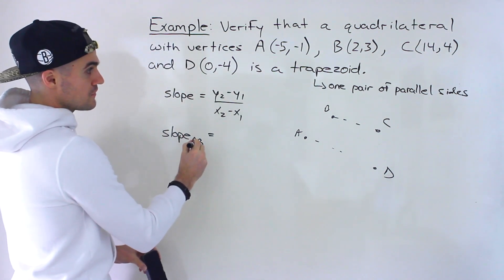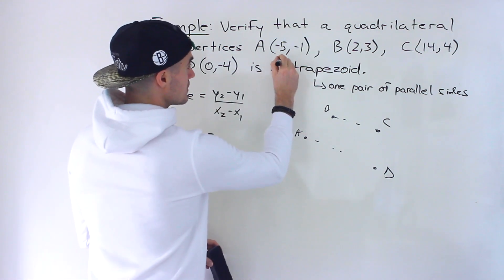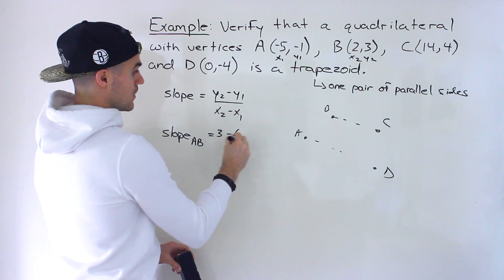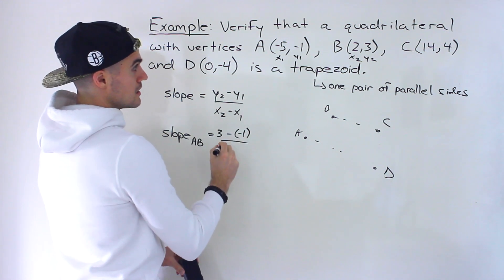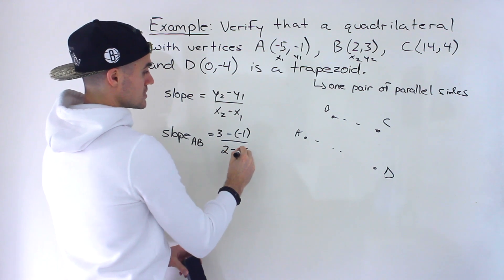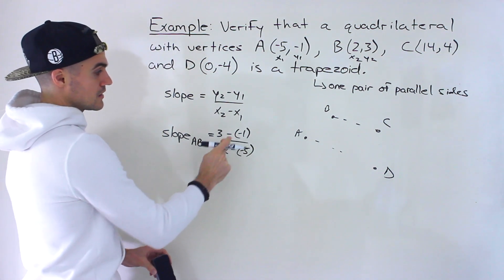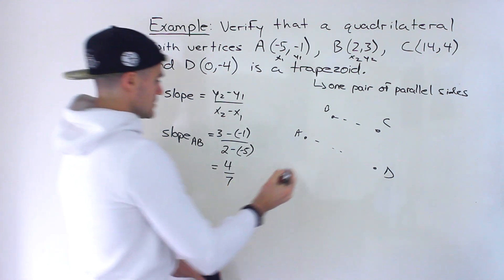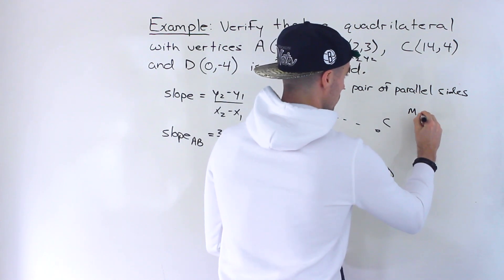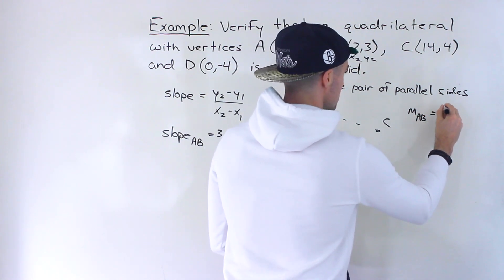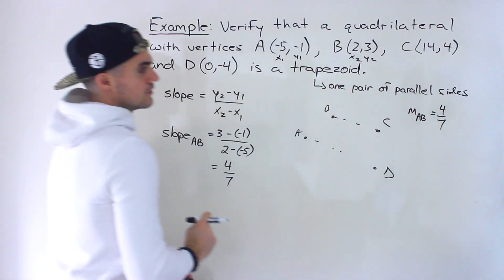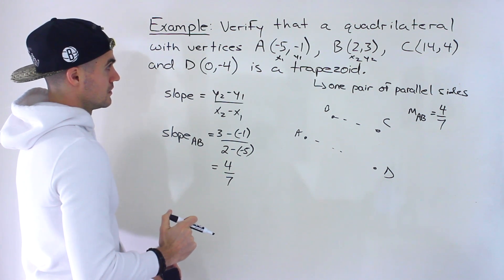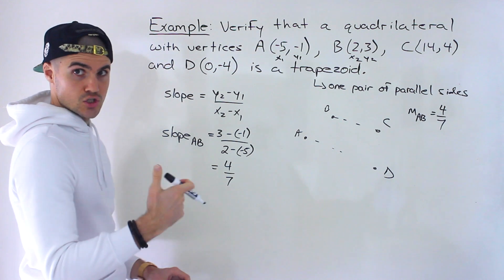So the slope of AB. So let's label this x1, y1, x2, y2. So we'll have y2 which is 3 minus y1 which is -1. Be careful with the brackets there. x2 which is 2 minus x1 which is -5 like that. So this would end up being 3 plus 1 which would give us 4. Then we'll have 2 plus 5 which is 7. So the slope of AB is positive 4 over 7.